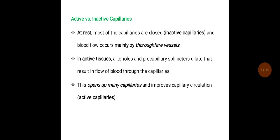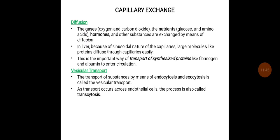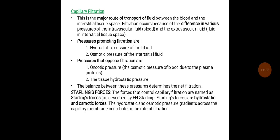At rest, most of the capillaries are closed — called inactive capillaries — and blood flow occurs mainly through thoroughfare vessels. In active tissues, arterioles and pre-capillary sphincters dilate, resulting in flow of blood through capillaries, opening up many capillaries and improving capillary circulation. Capillary exchange occurs mainly by diffusion, vesicular transport, and capillary filtration.